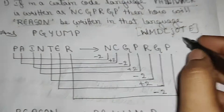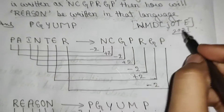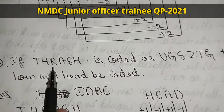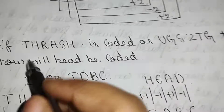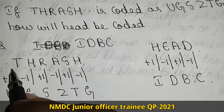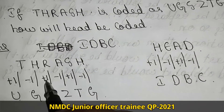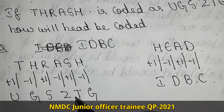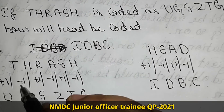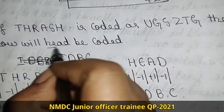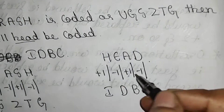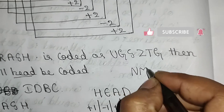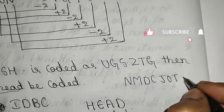Next question: if TRASH is coded as UGSZTG, then how will HEAD be coded? Write THRASH and apply plus 1, minus 1, plus 1, minus 1 to get UGSZTG. Applying the same pattern to HEAD: H plus 1 gives I, E minus 1 gives D, A plus 1 gives B, D minus 1 gives C. So HEAD is coded as IDBC.